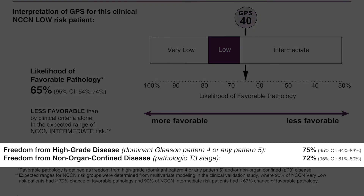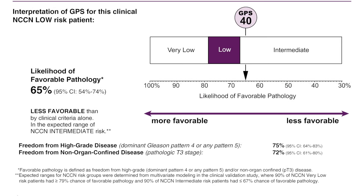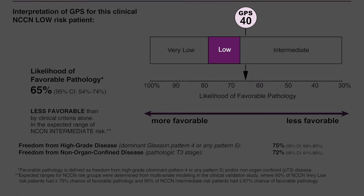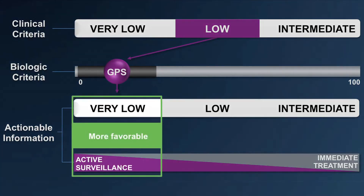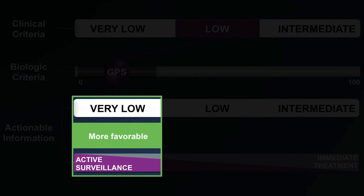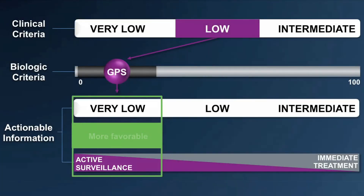At the bottom of the report, you will see the individual components of favorable pathology broken out by high-grade disease and non-organ-confined disease. For some men, GPS will predict the risk of adverse pathology to be higher than expected based on clinical factors alone. For those patients, the choice of immediate therapy may be influenced by specific information about the likelihood of high-grade disease and/or non-organ-confined disease. If the GPS result predicts biology more favorable than clinical criteria alone, the patient has a likelihood of favorable pathology consistent with NCCN very low risk, where active surveillance may be the most appropriate option. His risk is now in the same range you would expect for men with very low risk characteristics — that is, meeting Epstein criteria — a group that we know has been successfully and safely managed with active surveillance.